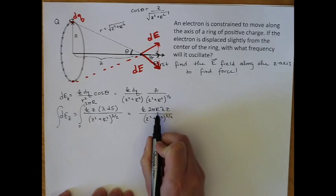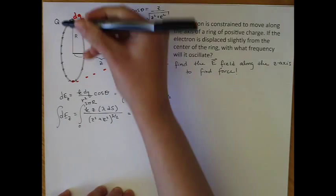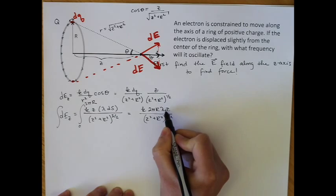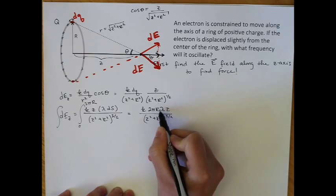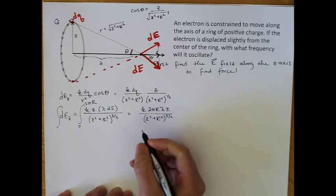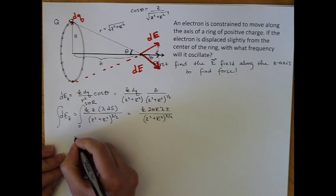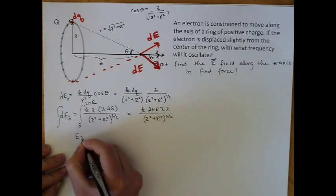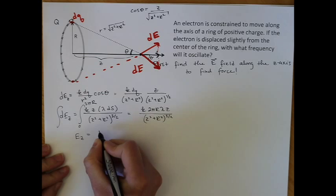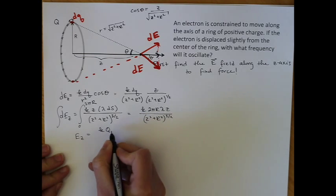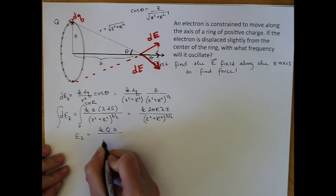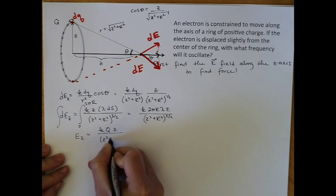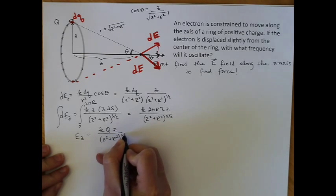And 2πR times lambda is just q, because this is the charge density. So charge per unit length times the length just gives charge. So that means that the E field in the z direction is just kqz over (z squared plus R squared) to the three-halves.